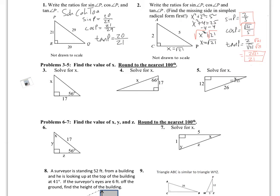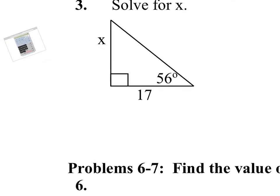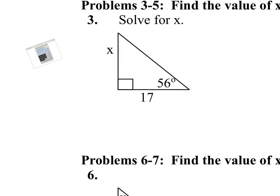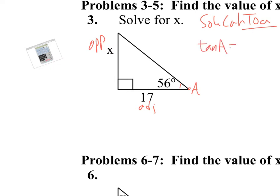In the next set of questions, we're going to find some missing sides and missing angles using trigonometry. For number three, we're looking for a missing side. We know the angle — call it A. We have the opposite leg and the adjacent leg. Opposite and adjacent means tangent. So we write: tangent of A equals opposite over adjacent. That is the definition.